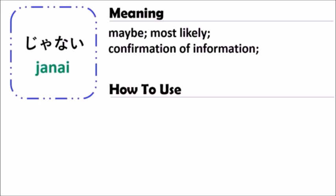You confirm whether something is true or not true. For example, if you forget what day today is, and you remember it might be around October or November 28 or 29, you can say 'Today is the first, right?' something like this. When you use the grammar of ja nai, you use a noun or phrase plus ja nai, and the intonation should be a question intonation — it changes to indicate a question.